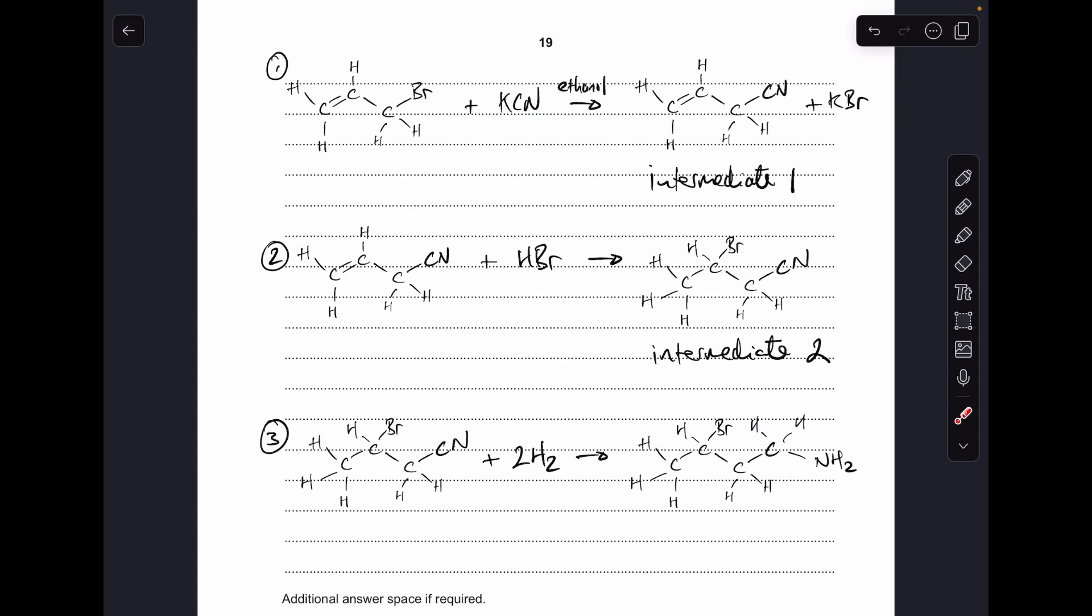Step two: I'm taking that intermediate one and I'm reacting the carbon-carbon double bond with the HBr to generate the bromoalkane group. So that's my intermediate two.